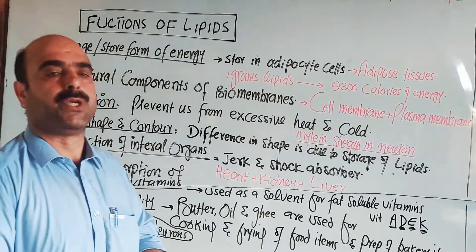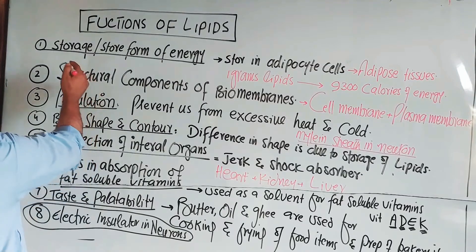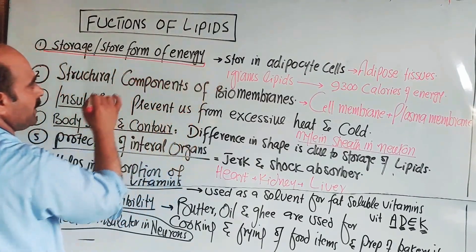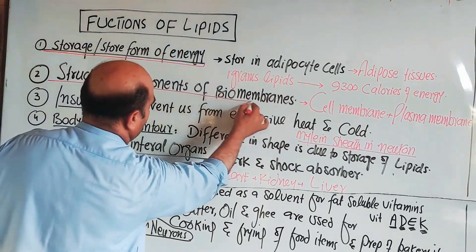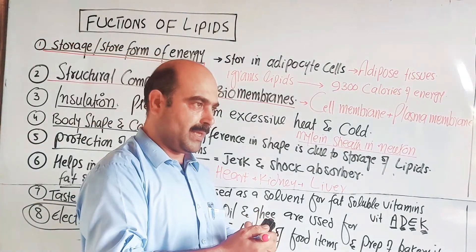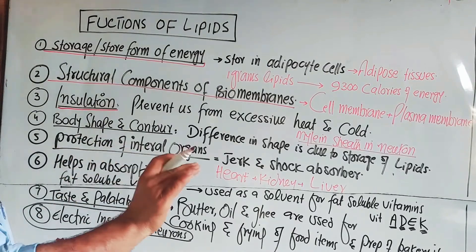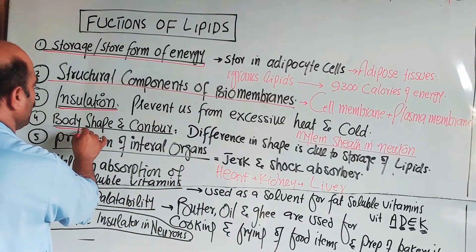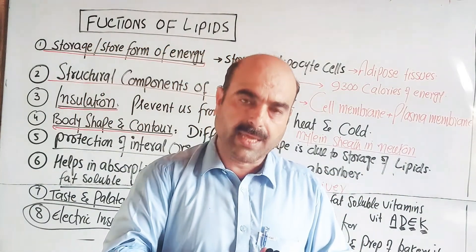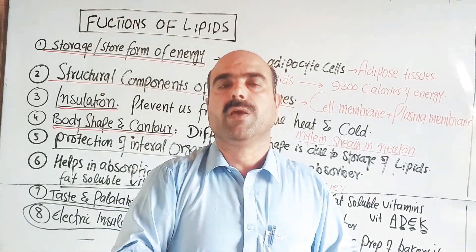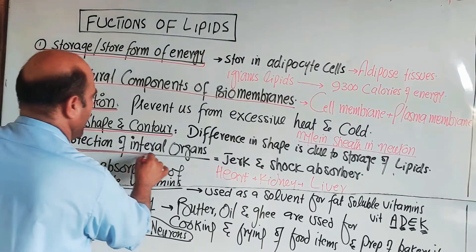So students, these were all the various functions, uses, and importance of lipids. To summarize: lipids serve as a storage form of energy, structural components of biomembranes like the plasma membrane, insulation against excessive heat or cold, and they determine body shape and contour through fat deposits. If fat is stored, body shape is fuller; if fat is reduced, the body becomes slimmer.